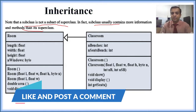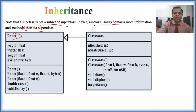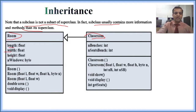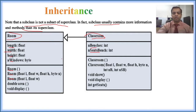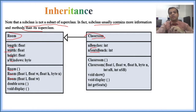Here is a classroom, and classroom is the super class, parent class, or base class. It has variables: length, width, height, and end windows — three constructors, class area, and display classroom features. End benches and end sit benches are the additional features when the room is converted to a classroom.